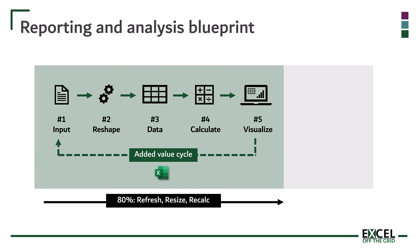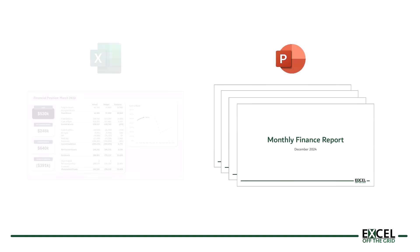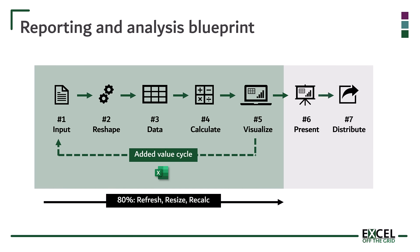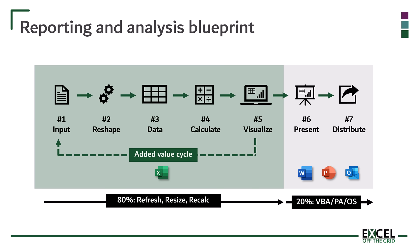Then if we need to, we can move on to step six, which is present. This is where we collate the multiple items created in the visualize step into a single package. It could be an Excel dashboard, it could be a PowerPoint presentation, or it could be a whole host of other formats. Finally, we get to step seven, which is distribute. This is where we distribute our output to the intended users. This could be via email, or it could be saving it in a shared location. We might even send it to a printer and get a physical copy. These last two steps are when we get to reach outside of Excel and work with other applications. Therefore, it's these steps where we might decide that we need to use VBA or Office Scripts and Power Automate to help us interact with those other applications.